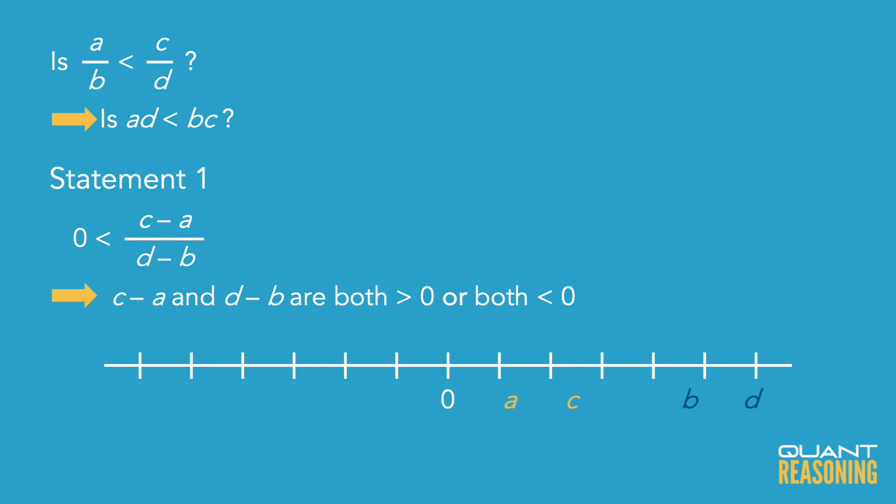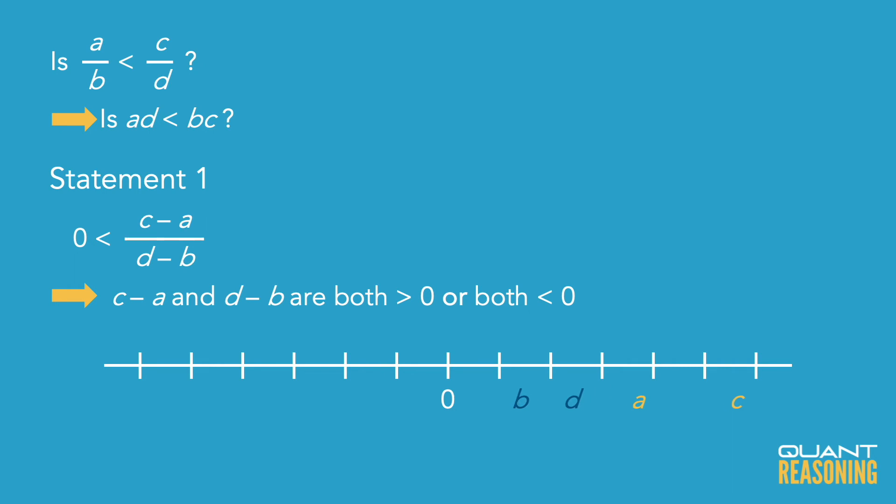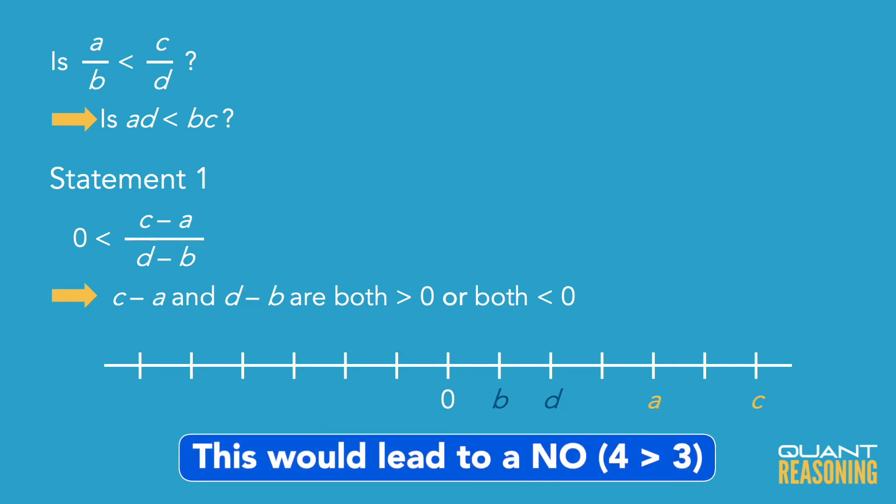Another way to look at that, either C is to the right of A and D is to the right of B, or vice versa, C is to the left of A and D is to the left of B. But we wanted to know which ratio is greater, A over B or C over D.